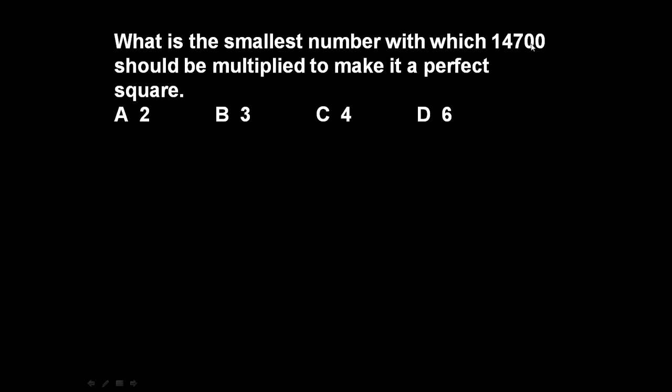So friends, to answer such question, first let us factorize 14700. Let us determine what are its factors. As the last digit is 0, it is divisible by 5.